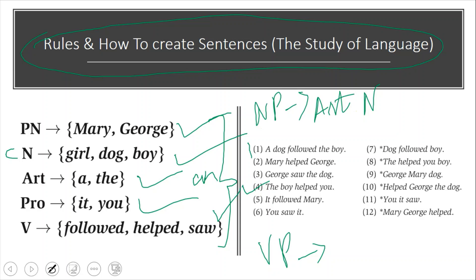The verb phrase contains a verb and a pronoun, or we can also call 'you' a noun phrase. Similarly, the other sentences are also correct: 'a dog followed the boy,' 'Mary helped George,' 'George saw the dog,' 'it followed Mary,' 'you saw it.'